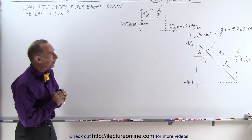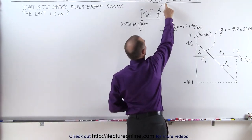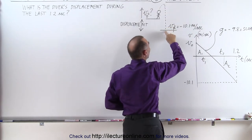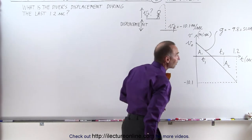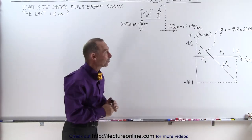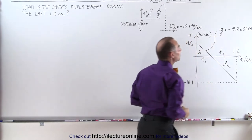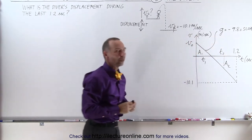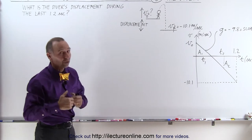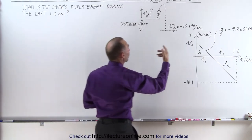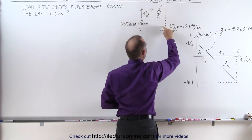When we think about it, if the diver spends 1.2 seconds from the highest point diving down to the water, then in 1.2 seconds the diver will be moving faster than 10.1 meters per second in a negative direction, since the acceleration due to gravity is 9.8 meters per second squared. This indicates that part of those 1.2 seconds the diver is moving upward before turning around and coming back downward.